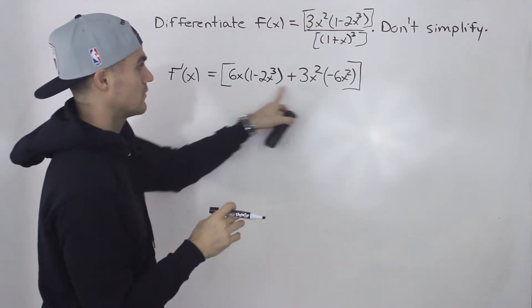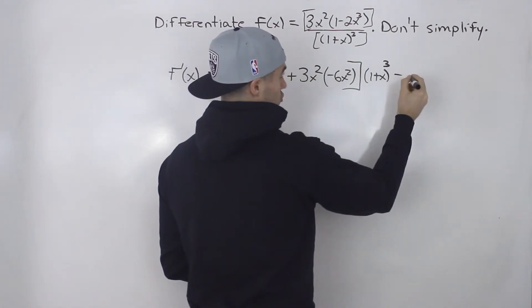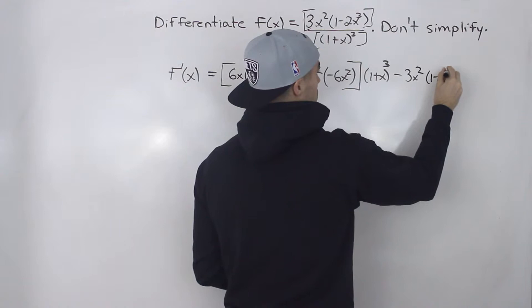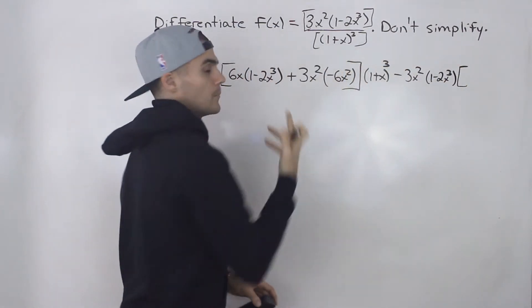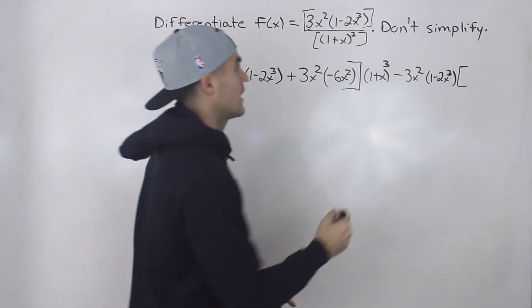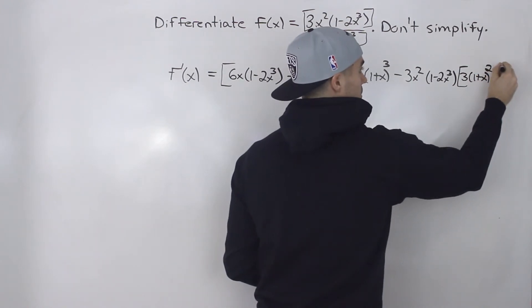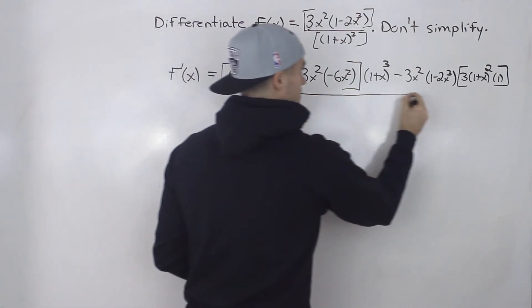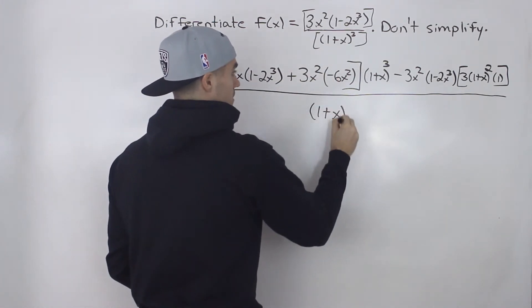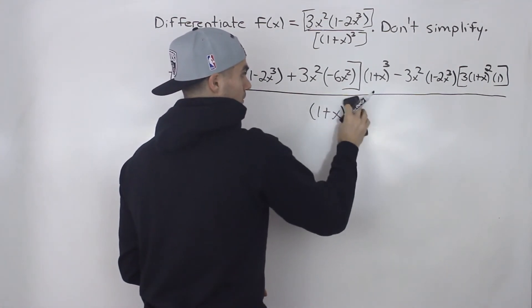This square bracket represents the derivative of the numerator function. Going back to the quotient rule, we take the derivative of the numerator function and multiply it by the denominator left as is. Then we subtract the numerator left as is — 3x squared times 1 minus 2x cubed — multiplied by the derivative of the denominator. To take that derivative we apply the chain rule since it's a composite function: bring the 3 down, rewrite 1 plus x squared, and the derivative of the bracket is just 1. All of this is over the denominator squared — 1 plus x to the power of 3, squared — and we can multiply those exponents to write 1 plus x to the power of 6.